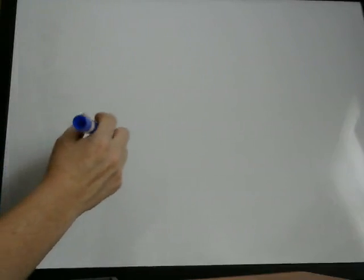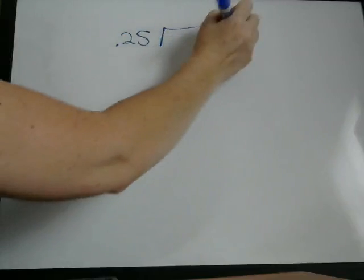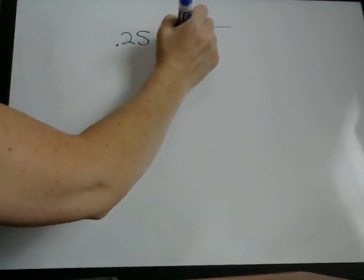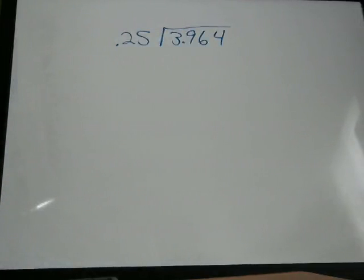When we're dividing decimals using long division, and again, there's a video on long division as well. Let's say we're doing 0.25 into 3.964. 3.964 divided by 0.25.